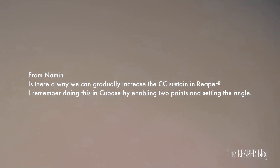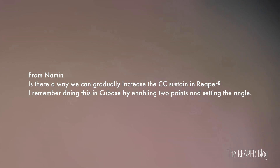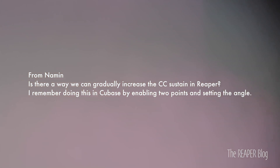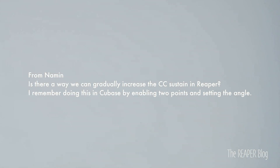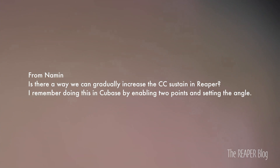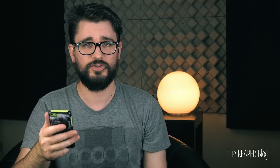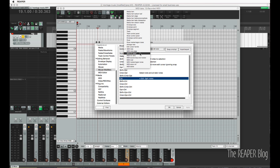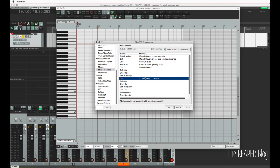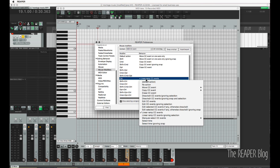The last question comes from Naaman: is there a way to gradually increase the CC sustain in Reaper? He remembers doing this in Cubase by enabling two points and setting an angle. First, you need to check your mouse modifiers under MIDI CC event — it should be set to Control to make a linear ramp in the events.